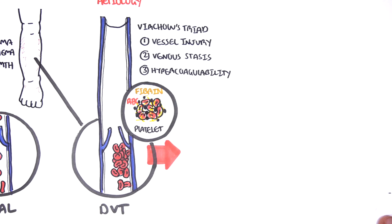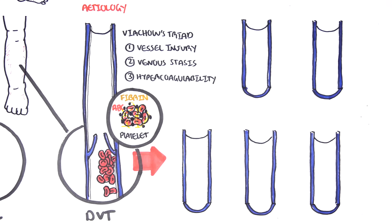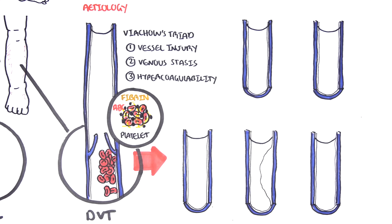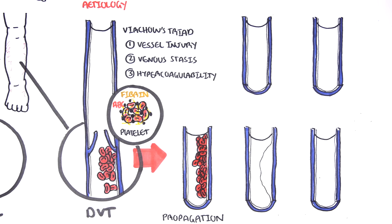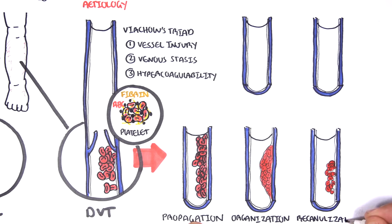And so once a thrombus has occurred, the thrombus itself has a few fates, including propagation, which means just growing along the vessel. Organization, organizing within the vessel layer. Re-cannulization, forming holes within the thrombus.